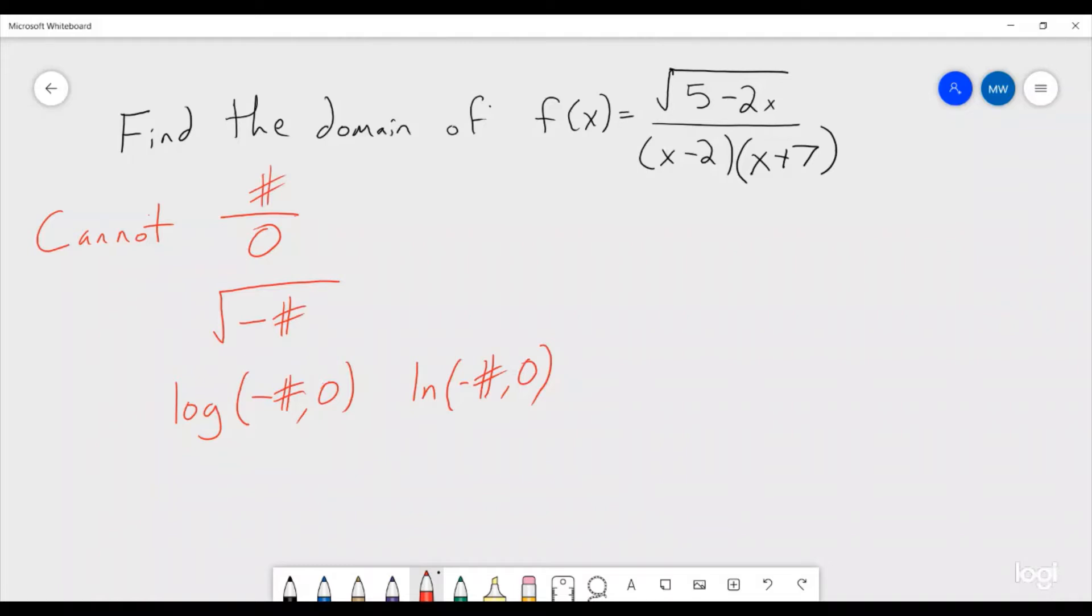So in this problem do we have any of those sorts of situations? Well we do. We have some times when we're dividing by 0 when either x minus 2 is 0 or x plus 7 is 0. So those two things are going to be pieces that cause problems in our domain.